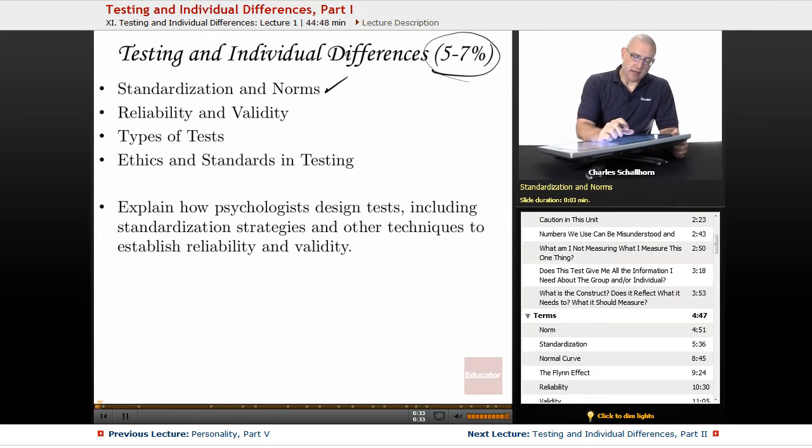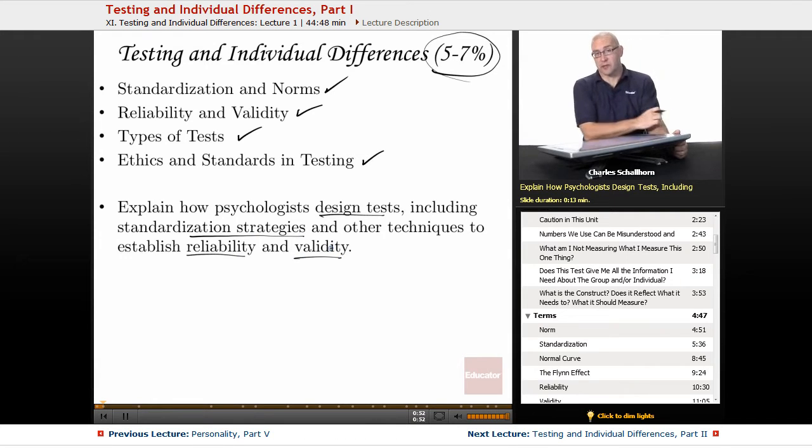We're going to be looking at standardization and norms, reliability and validity, types of tests that are used in psychometrics, and then ethics and standards in testing. And then, of course, we're going to be looking at the design of tests, including standardization strategies and other techniques to establish reliability and validity, two incredibly important parts to understanding standardized tests.